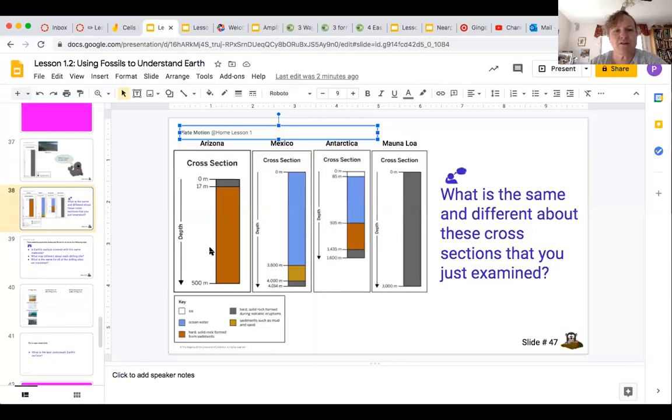So I'm just going to share my screen with you to remind you of the four cross sections. We looked at drilling sites in four different places: Arizona, the desert of Arizona, the ocean near Mexico, the Antarctic, and a volcano in Hawaii.